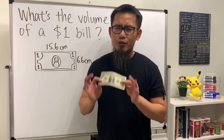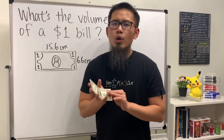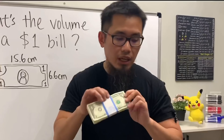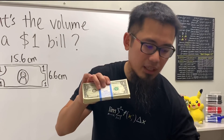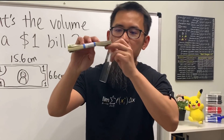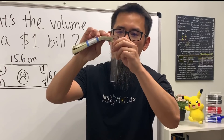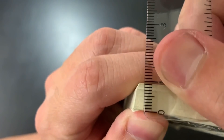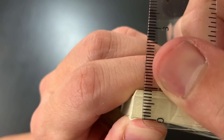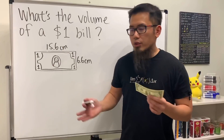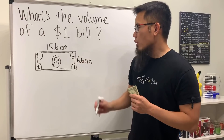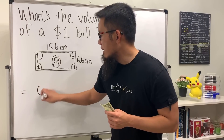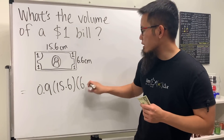With just one dollar bill, that's of course not enough. What we really need is 100 bills, and now we can easily measure the height. As you can see, the height is approximately 0.9 centimeters. So for the volume of these dollar bills, all we have to do is multiply: 0.9 times 15.6 times 6.6.